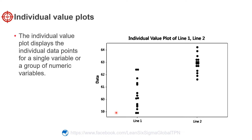even if some are the same or very close to each other. Here are the data points from line 1, with dimensions that range from 58 to 63 mm. Although there are no obvious outliers in this dataset, we can see that the individual value plot would make them easy to spot.